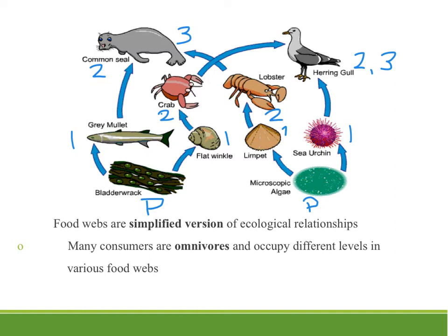Food webs, even though they're more complex than food chains, are still simplified versions of ecological relationships. They give the big picture of how energy flows through an ecosystem and help us predict the impact of losing key organisms on the whole food web system. Consumers can be carnivores eating only meat, omnivores eating both meat and producers, or scavengers going after animals that have already died. Many consumers really are omnivores and will occupy different levels in the food web — if they dine on a producer they are acting as an herbivore at that moment.